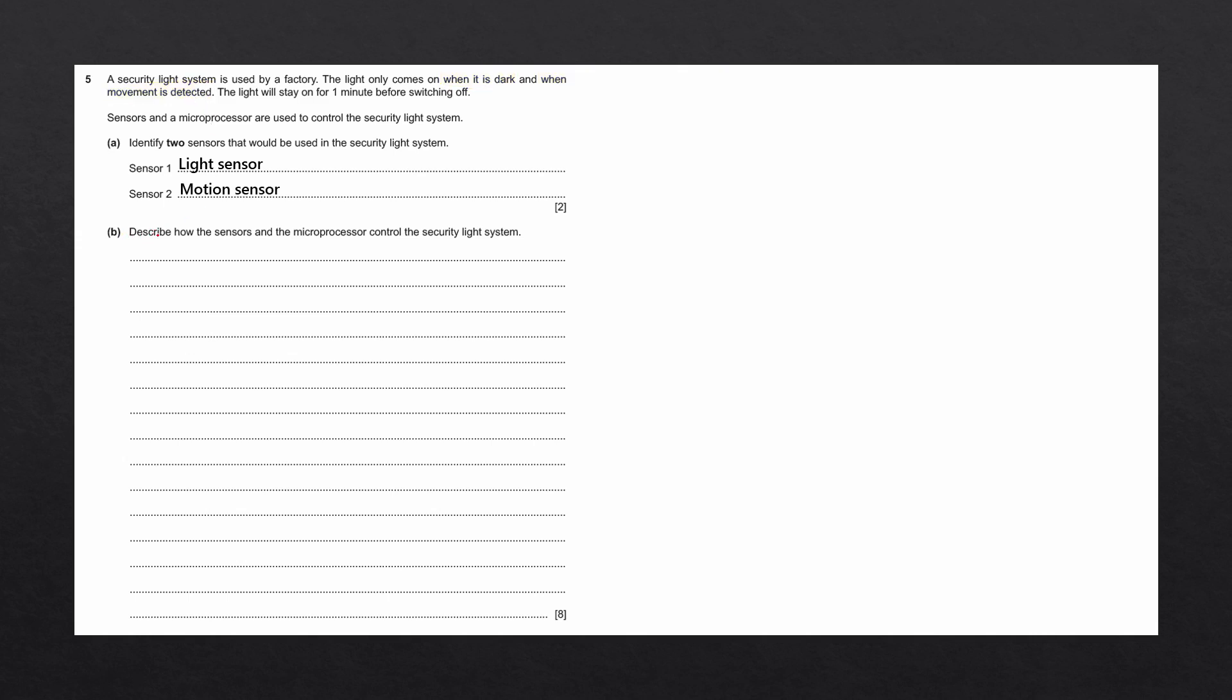Question B says, describe how the sensors and the microprocessor control the security light system. To answer this question, we're going to use our SCAR acronym. The first step is to mention how the sensor sends data to the ADC and to the microprocessor.